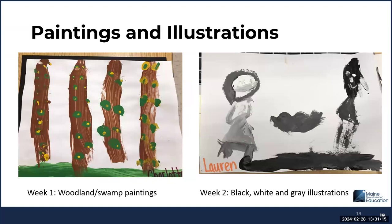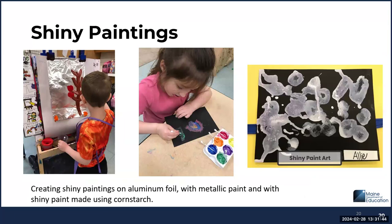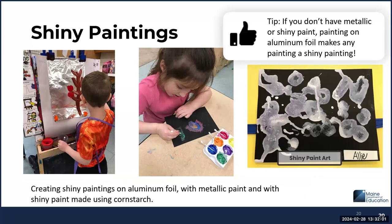Throughout the unit, there are a variety of painting opportunities making creations inspired by the core books. Children create art connected to Play With Me and Raccoon on His Own, as well as black, white, and gray art connected to Kitten's First Full Moon. Shiny paintings connecting to Play With Me and Raccoon on His Own can be done in a few ways — painting on aluminum foil with metallic paint or with a shiny paint made using cornstarch. A tip: if you do not have metallic or shiny paint, painting on aluminum foil can make any painting a shiny painting. Children will also create paintings with outlines like those used in Moon Bear's Shadow.